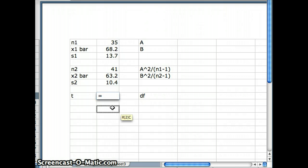So t is going to equal the difference of the two means. So that's x̄₁ minus x̄₂ divided by the square root of what?